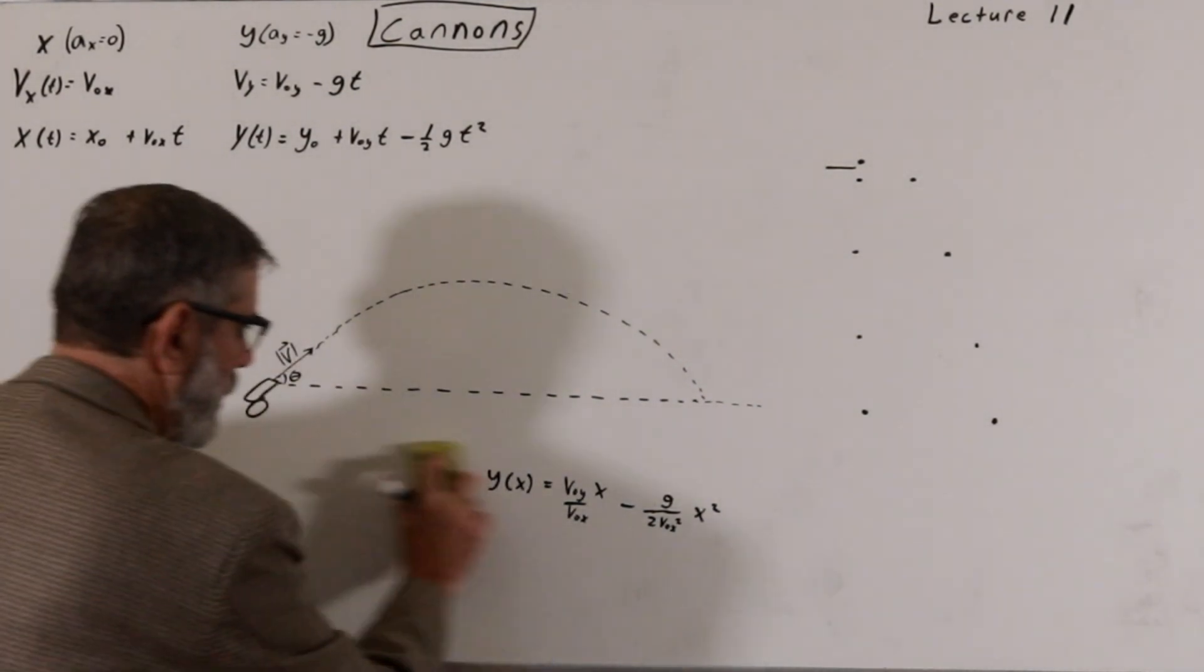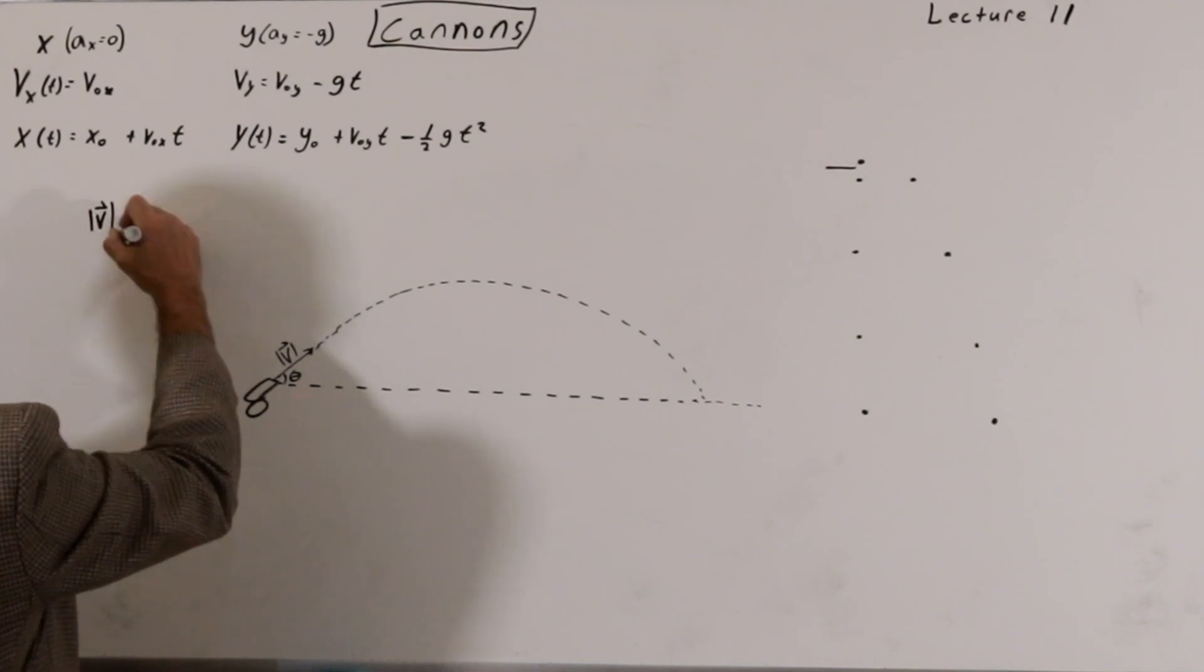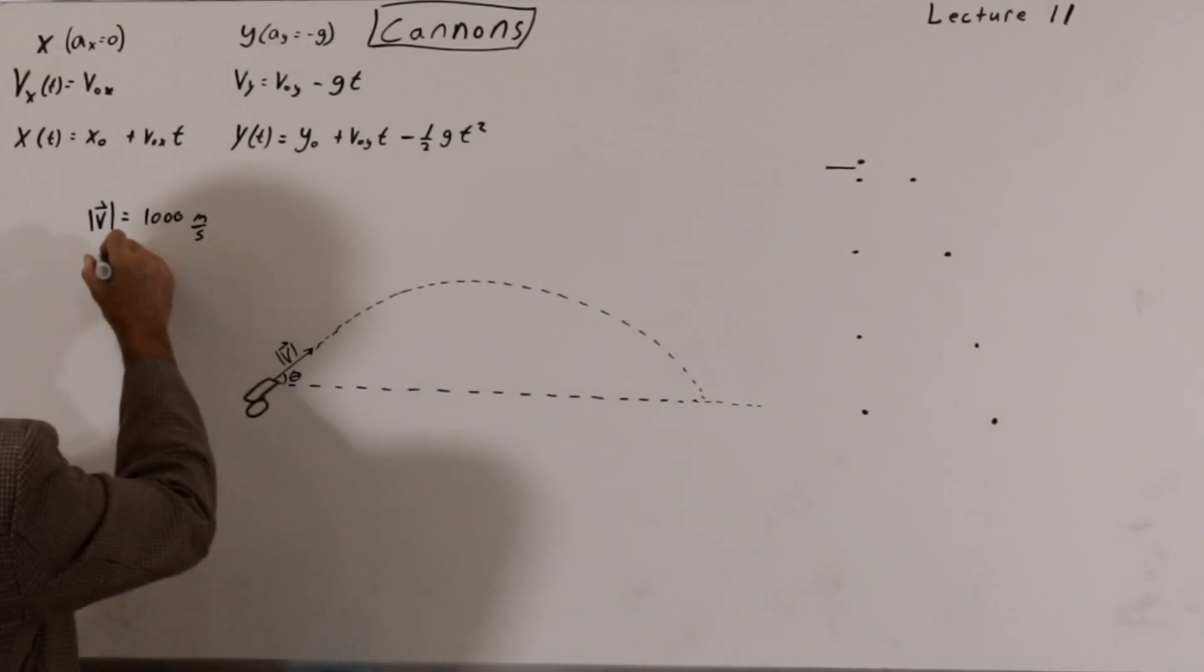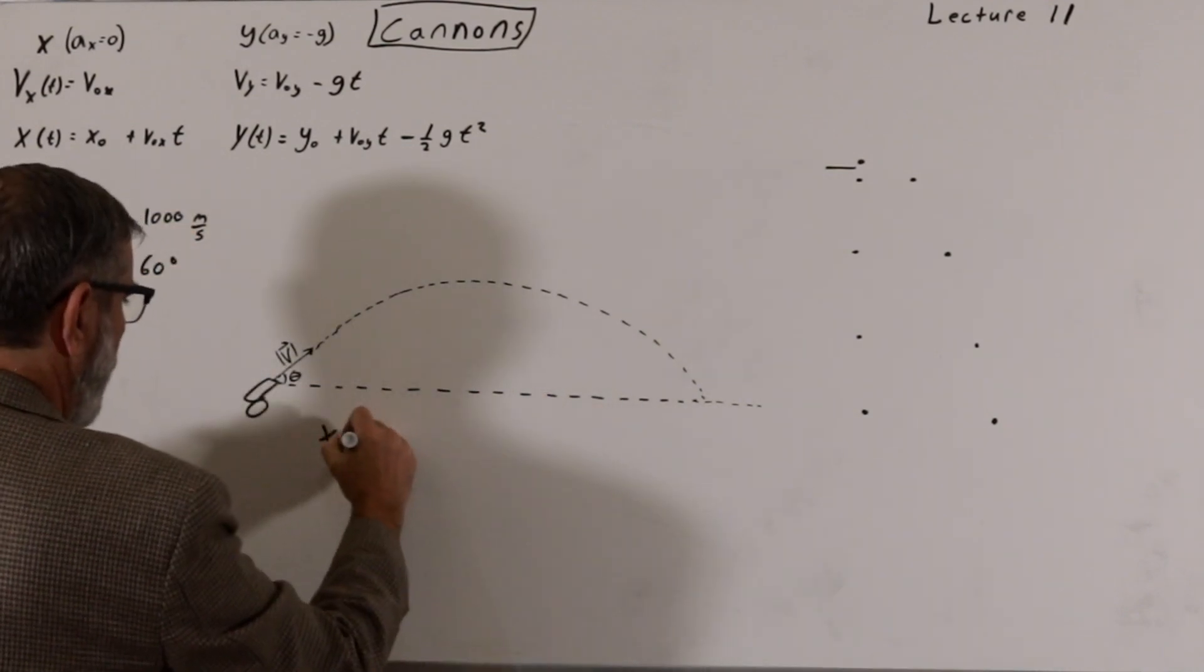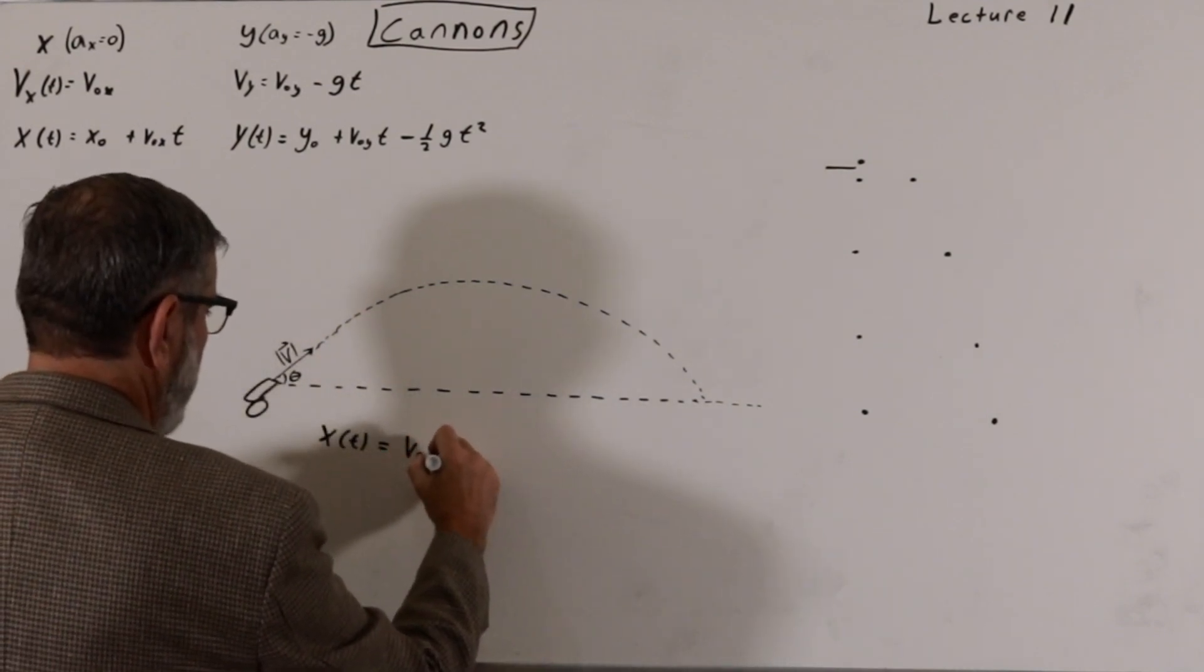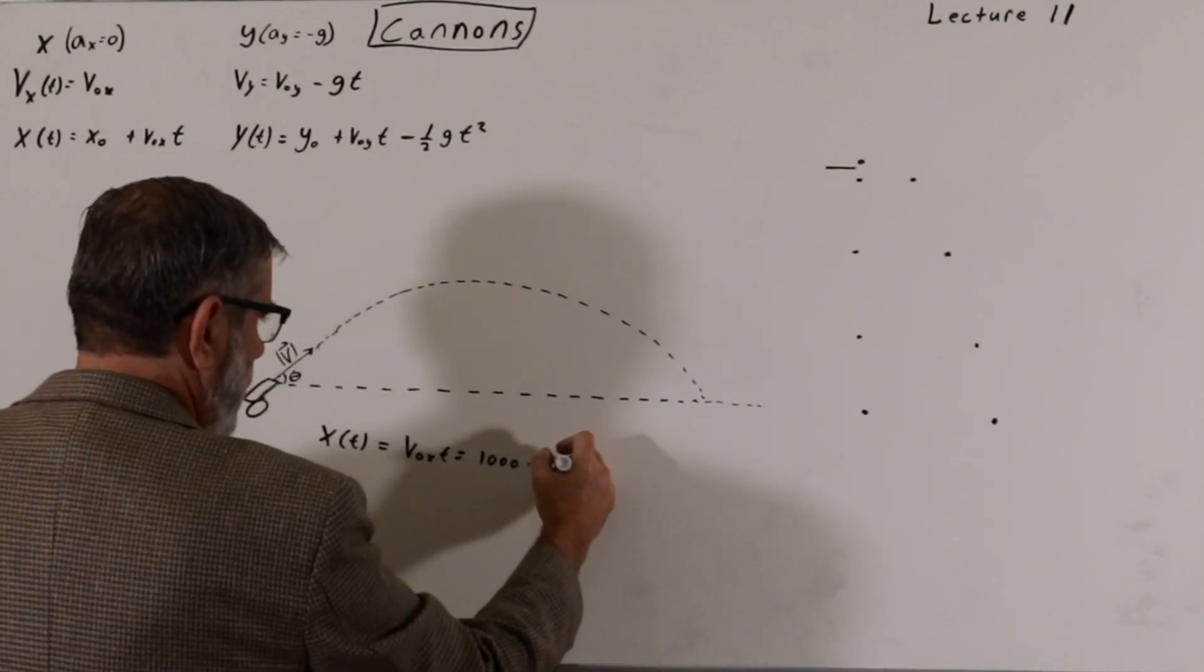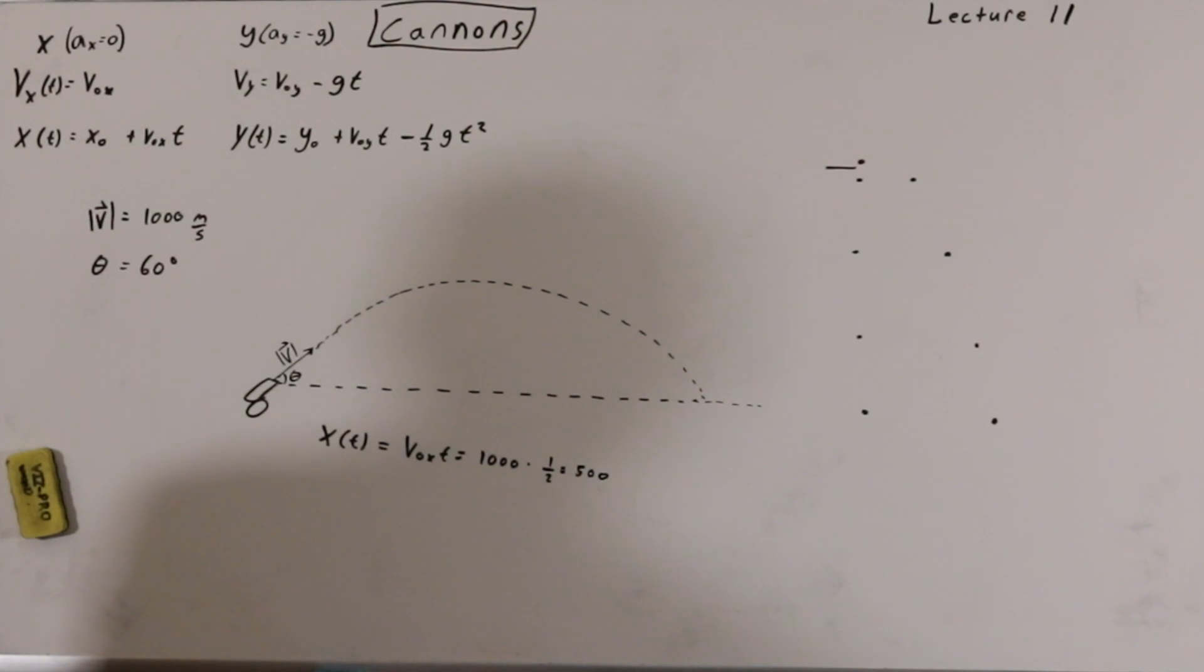Now let's put in some actual numbers and see what this range would be. So let's assume that the muzzle velocity of the cannon, this is the magnitude, is equal to a thousand meters per second. It's about what you get in a standard long rifle. And the angle, let's use one of the angles that we've used already. Maybe we'll use 60 degrees. To get the range, we want to know what x is at the time in which it hits the ground. So we have to find that time. Once we've found that time, we can simply substitute it into v0x times t, which is going to be equal to 1,000 times the x component will be the adjacent. So we use the cosine, the cosine of 60 degrees, which is going to be 1 over 2. So that's going to be equal to 500 times the time.